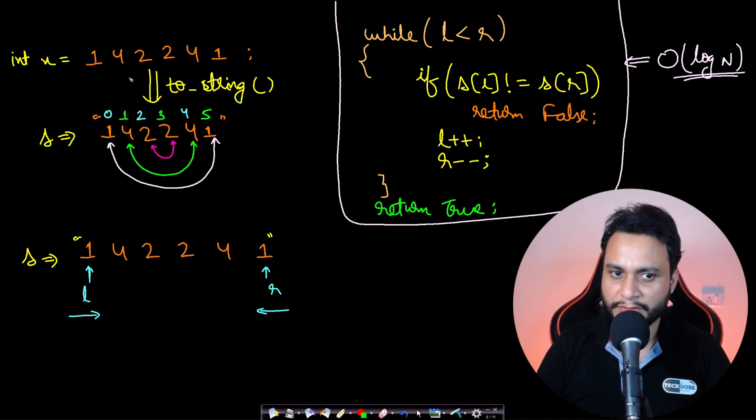Once you're done with the primality test, the next thing to know is how to check for a palindrome. This is also very easy. Given an integer number, we can simply convert it to a string. Once we know the string, we can use two pointers left and right and start checking from both ends.